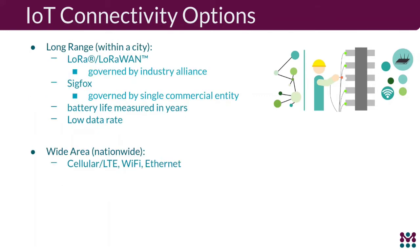LoRa is getting a lot of attention — it enables citywide networks of connected devices. Battery life on these devices is measured in years and data rates are very low, maybe sending one data package a day. Then there's cellular LTE and Wi-Fi internet, which are very commonly used.